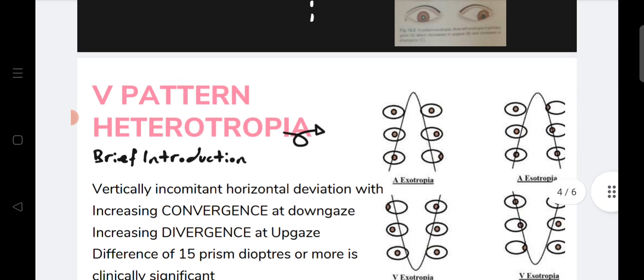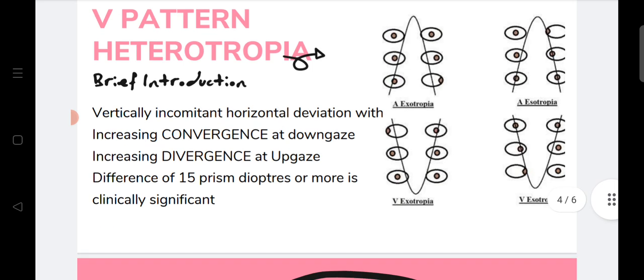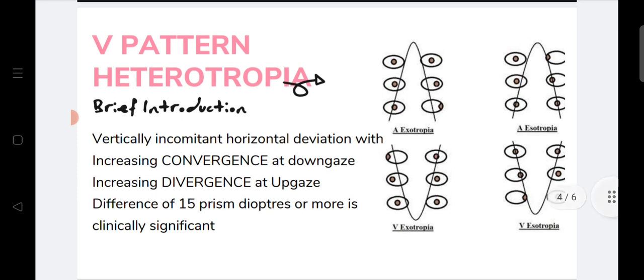Coming to V pattern heterotropia, it is a vertically incomitant horizontal deviation with increasing convergence at down gaze and increasing divergence at up gaze. A difference of 15 prism diopters or more is clinically significant for V pattern, whereas for A pattern heterotropia a difference of 10 prism diopters or more is clinically significant.